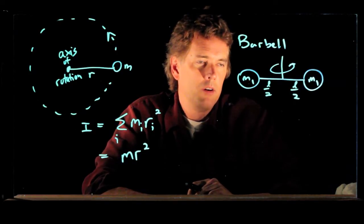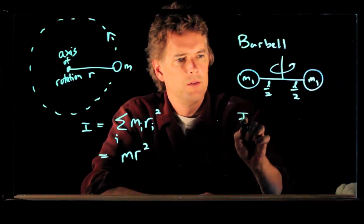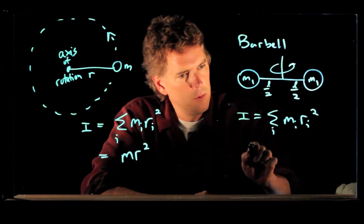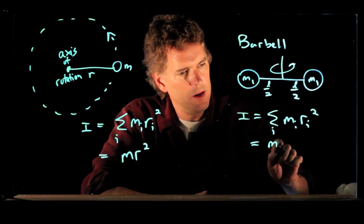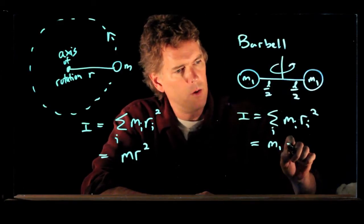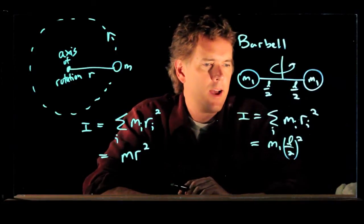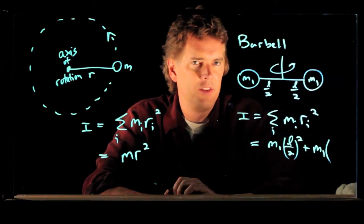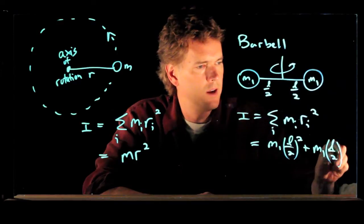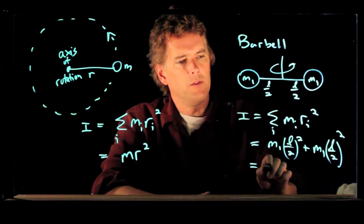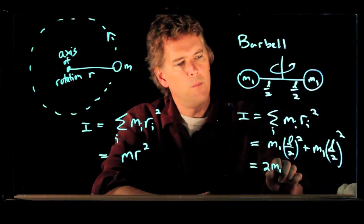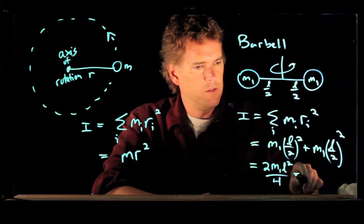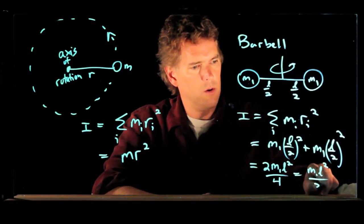How do I calculate the moment of inertia of this barbell? Well, it's the sum over i m sub i times r sub i squared. So we have two particles. We have m1 at a distance l over 2. And we have to square that. But we have another one of those. m1 and its distance from the axis of rotation is also l over 2. We're going to square that.